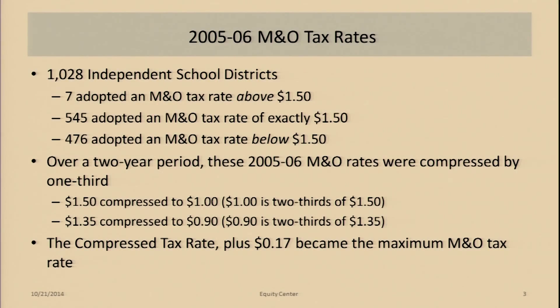In that special session in 2006, the legislature said we're going to compress tax rates — just public school M&O tax rates, not I&S, not city or county taxes. We're going to compress wherever you were in 2005-6 by a third. So your compressed tax rate is two-thirds of whatever your adopted M&O tax rate was in 2005-6. $1.50 would compress to $1.00.